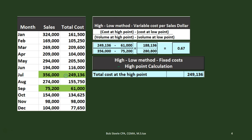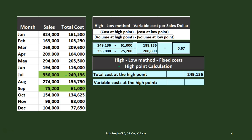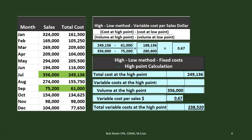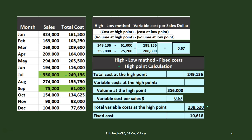At the high point, we have a total cost of $249,136 that we want to break out between variable and fixed. To calculate the variable cost at the high point, we take the volume at the high point — $356,000 in sales dollars — and multiply by the variable cost per sales dollar of $0.67, giving us $238,520 as the variable portion. Subtracting from the total, the fixed portion is $10,616.